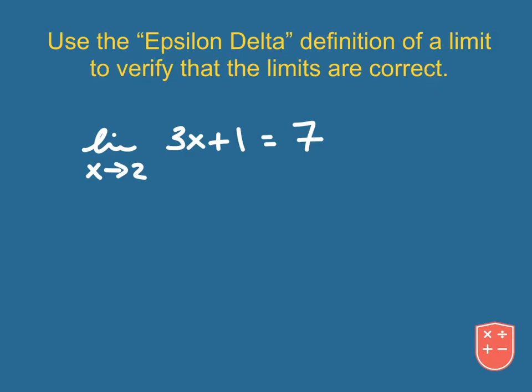Let's look at this statement here. It says the limit as x approaches 2 of the function 3x plus 1 is equal to 7. Let's look at a quick graph so that this whole statement can make some sense.